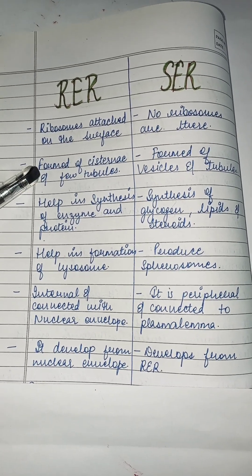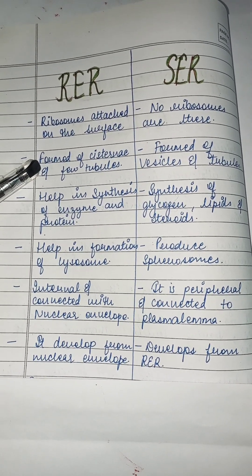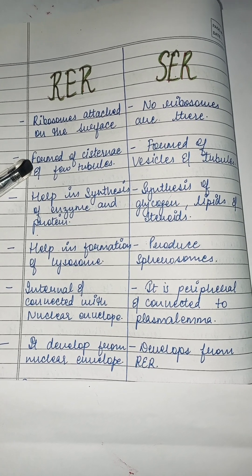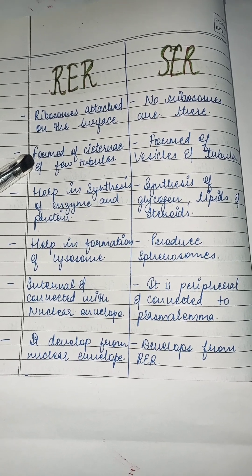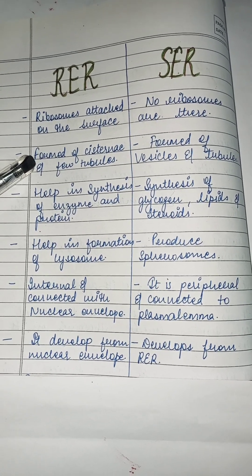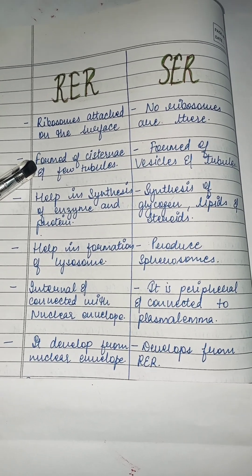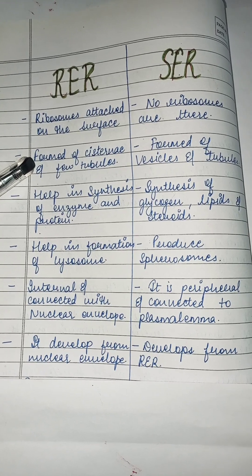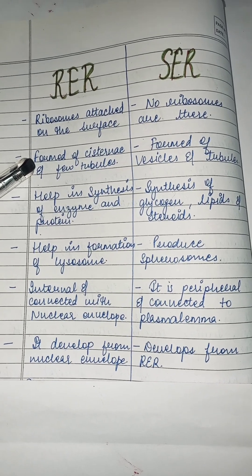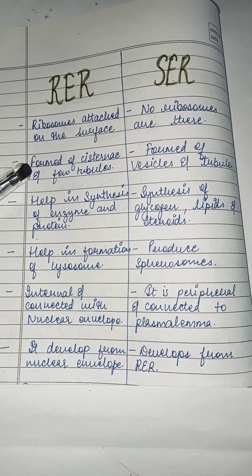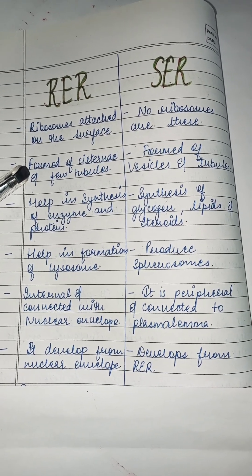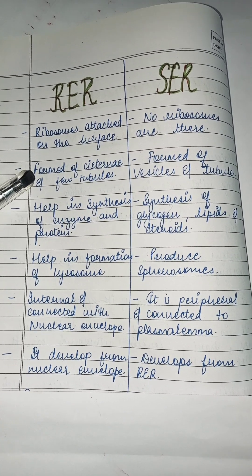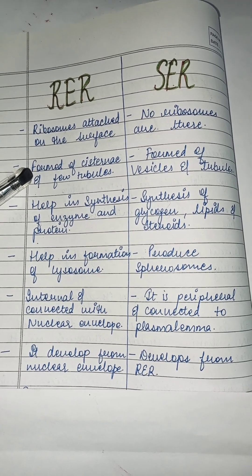Rough endoplasmic reticulum helps in the synthesis of enzymes and proteins, whereas smooth helps in the synthesis of glycogen, lipids, and steroids. The rough endoplasmic reticulum helps in the formation of lysosomes, whereas the smooth one helps to produce spherosomes.